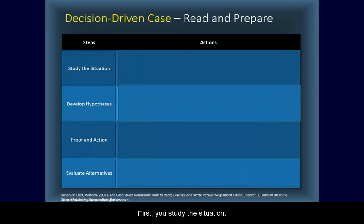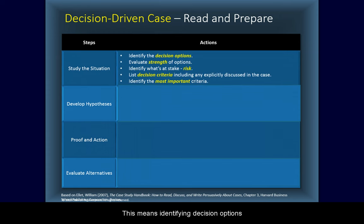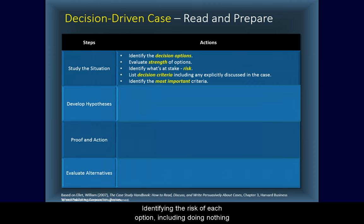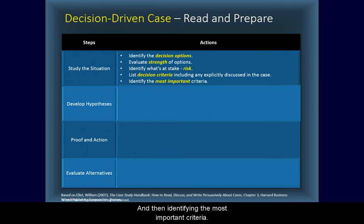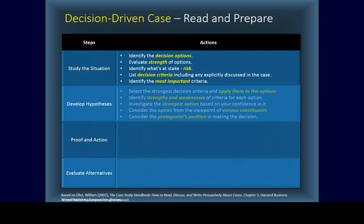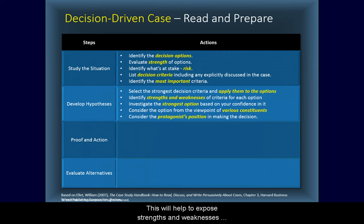First, you study the situation. This means identifying decision options, evaluating their strength, identifying the risk of each option including doing nothing, creating criteria for evaluating the options, and then identifying the most important criteria. Next, select the strongest criteria and evaluate the options. This will help to expose strengths and weaknesses for each option.